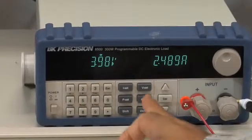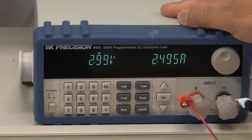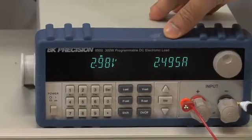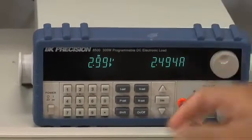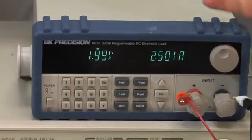I'll change the output voltage further down, and as you can see, the current is still constant. I'll change it down to 2 volts, and we still see the same current.